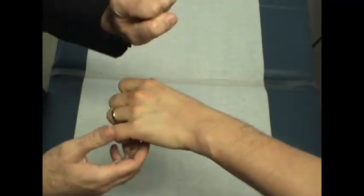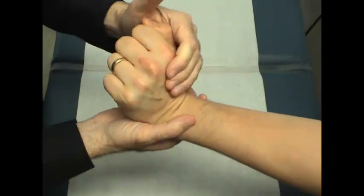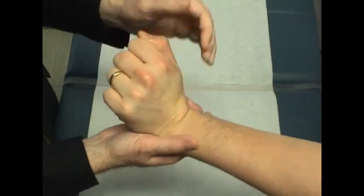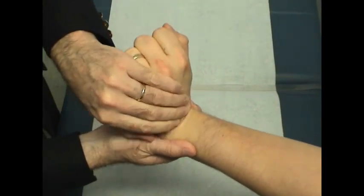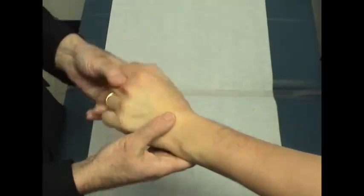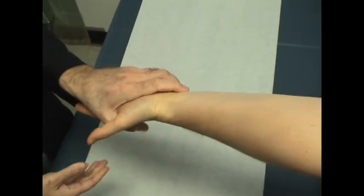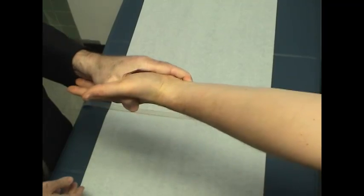Bend the wrist back. Extensor carpi radialis. Pull back, extensor carpi ulnaris. Turn over like this. Don't let me turn you over. And this is supinator.